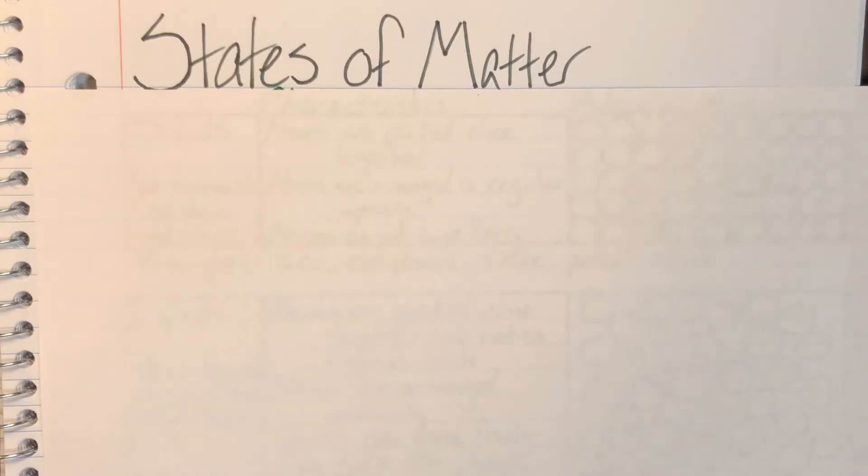Today we will be discussing the states of matter that can be readily found on earth and that we can interact with on a normal day-to-day basis. To do this we are going to be making a couple of tables, one for each type of state of matter.